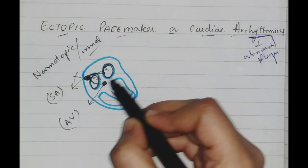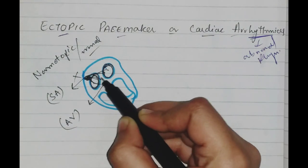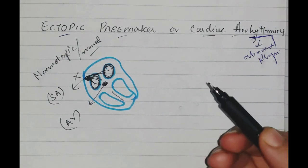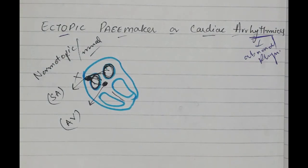One more thing is that the muscles of the atria can also act as an ectopic pacemaker. Thank you and Allah hafiz.